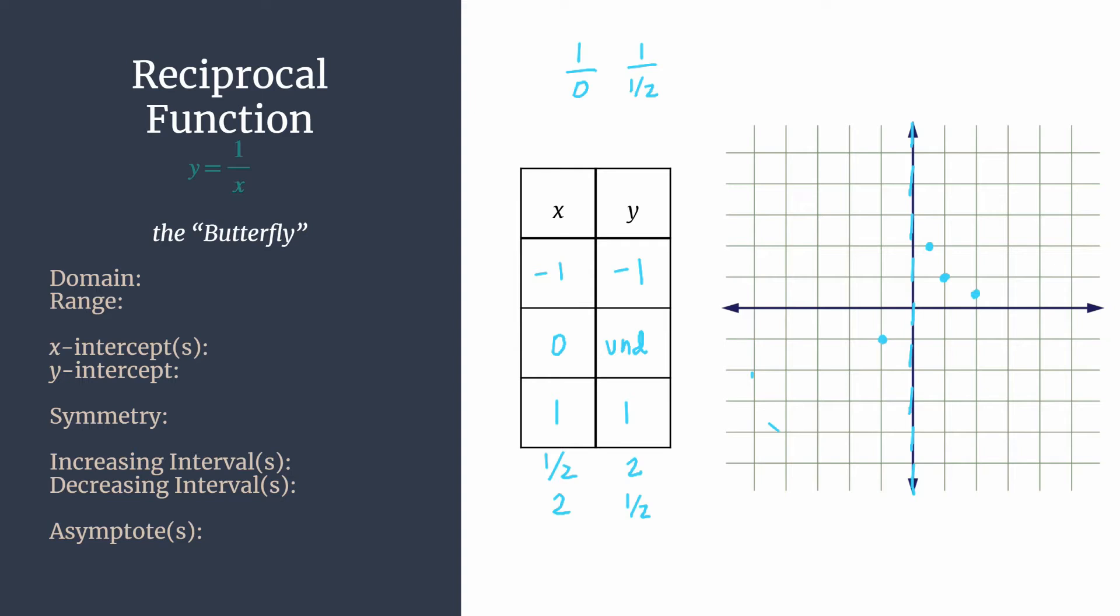You can imagine if you substitute in 3 for x you get the ordered pair 3, 1/3. If you substitute in 4 you get 4, 1/4, then 5, 1/5. Following this pattern and by observation you see that no matter how big your x keeps getting, you get a y that's closer and closer to zero but you'll never quite get to zero. That's our huge clue that we have also a horizontal asymptote here on the x-axis or at y equals zero.